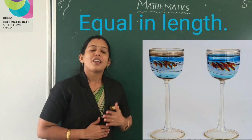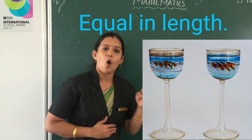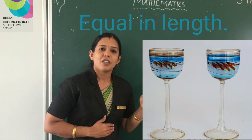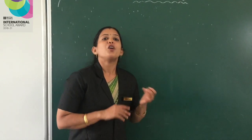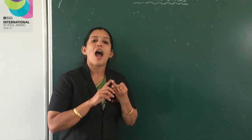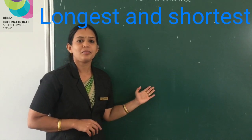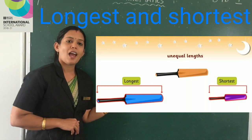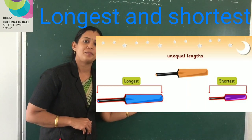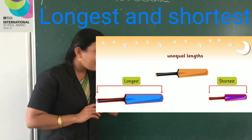Today we are going to compare the length of three objects. In that case, we use the words longest and shortest. Which one is longest and which one is shortest? That is the difference between longest and shortest.